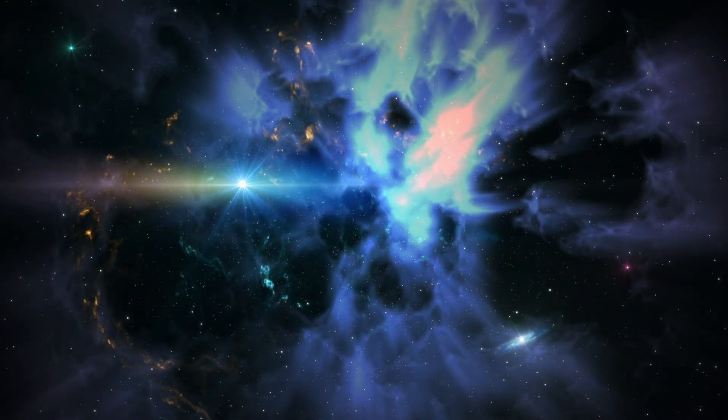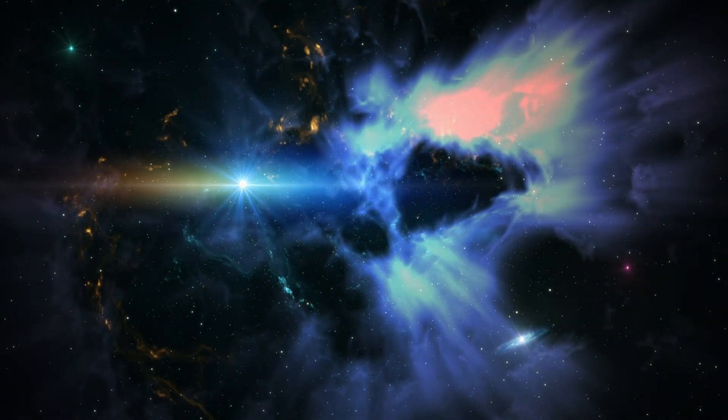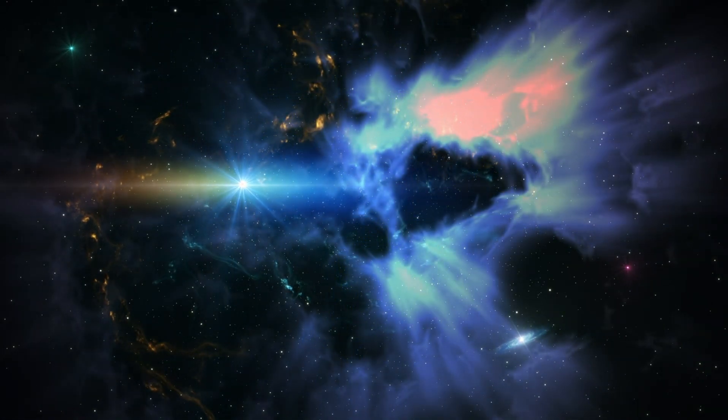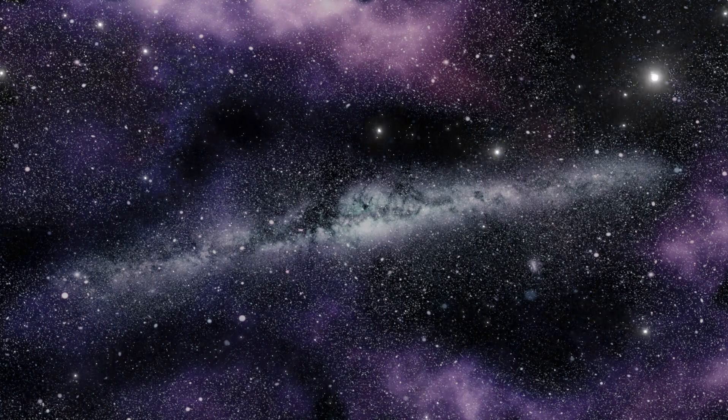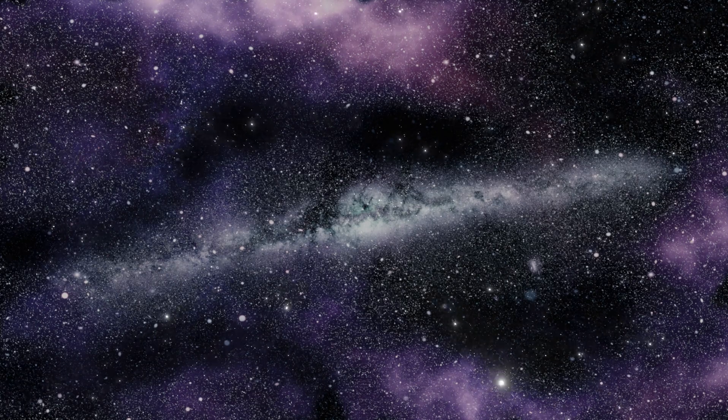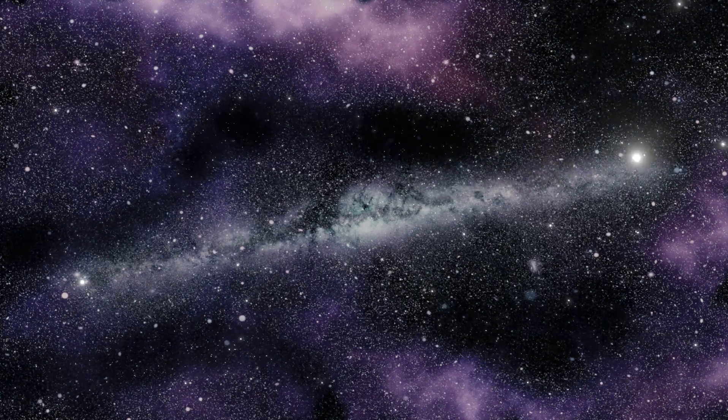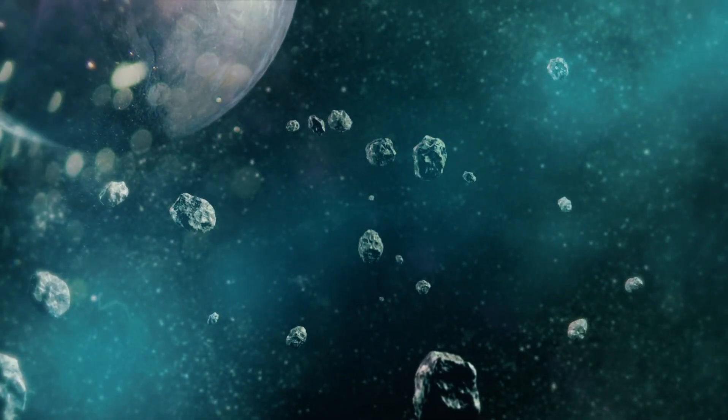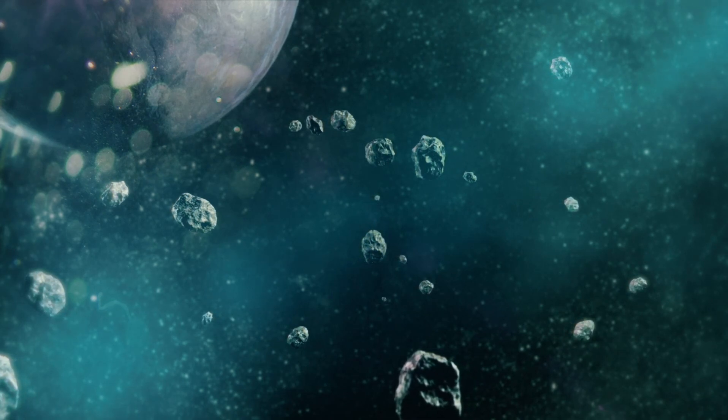there is a cluster of galaxies, SPT2349-56, where 14 galaxies are packed in 400,000 light years away. The diameter of our Milky Way is about 100,000 light years. That is, the density of star formation in this region is a thousand times greater than in our galaxy. If the Earth were there, it would be almost as bright at night as it is during the day. So space is a relative place. It can be very empty, and it can be packed with dozens of stars and megatons of matter within a few light years.